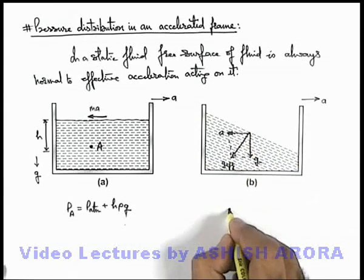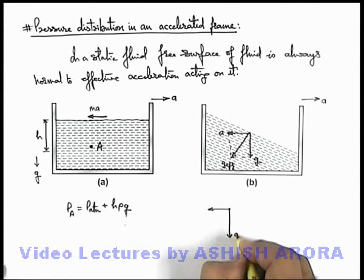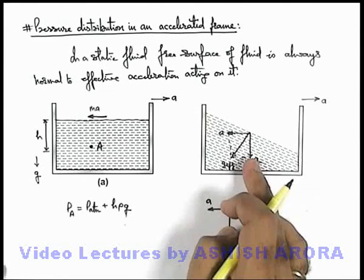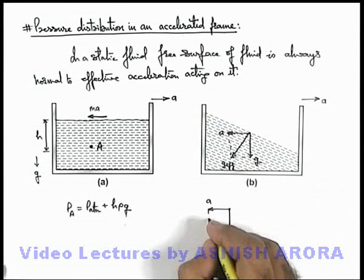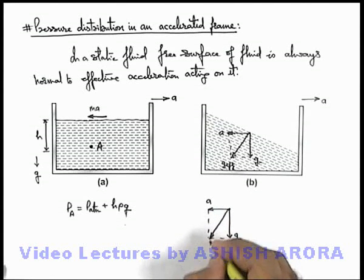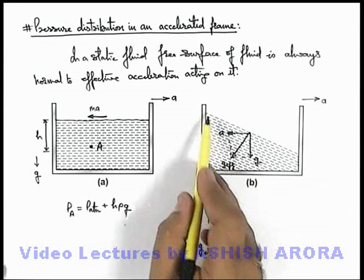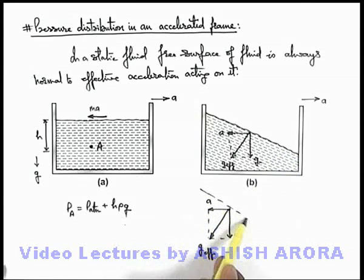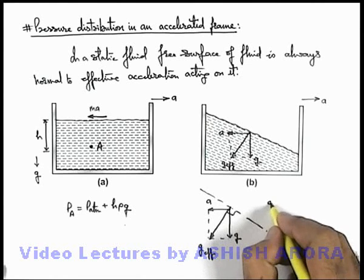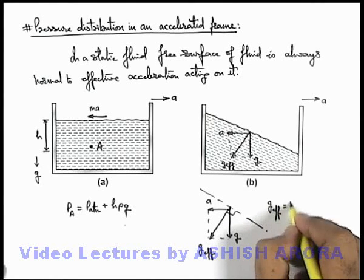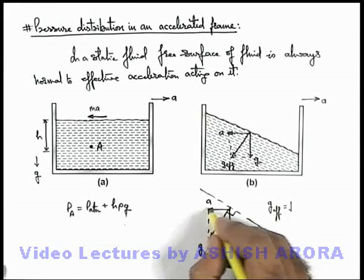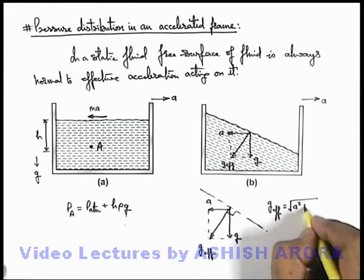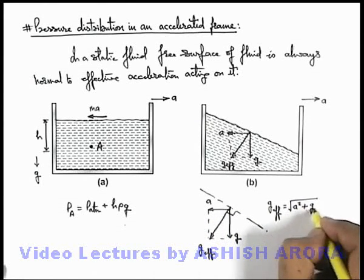If we draw the vector diagram: g is acting in the downward direction, and the effective acceleration on the fluid is in the leftward direction. So the resulting acceleration of the fluid, g_effective, will act in this diagonal direction, and automatically the free surface of the liquid is adjusted such that it is normal to the effective acceleration acting on it. This effective acceleration can be written as √(ay² + g²), since the two accelerations are normal to each other.